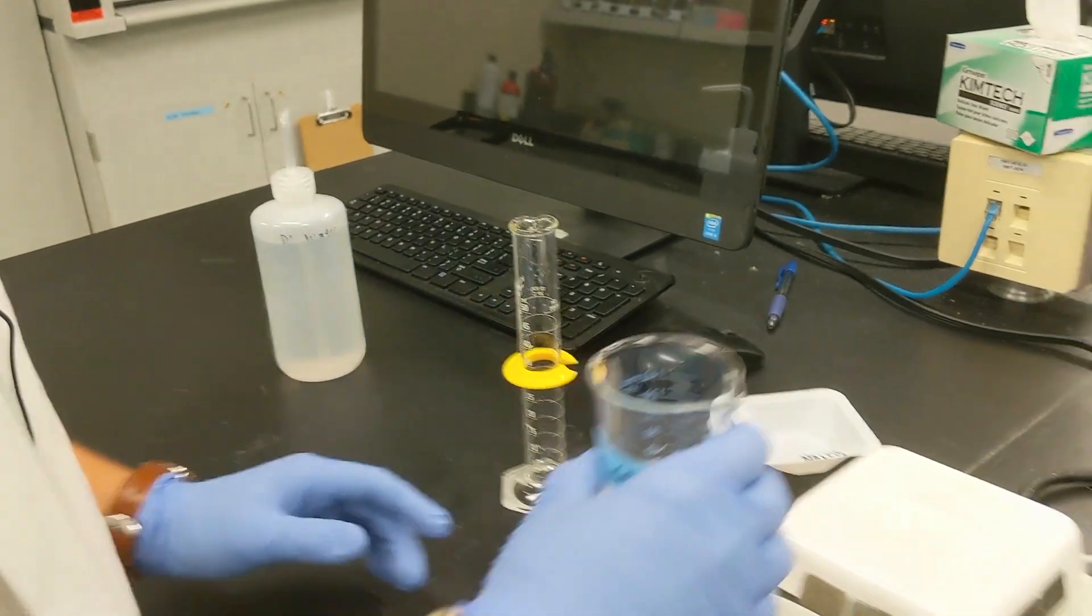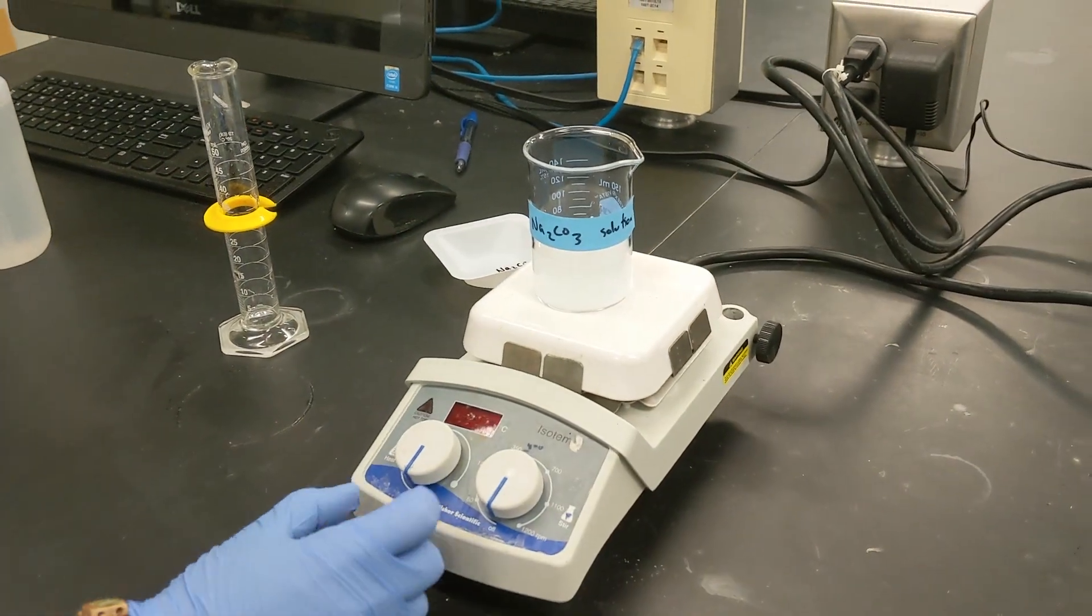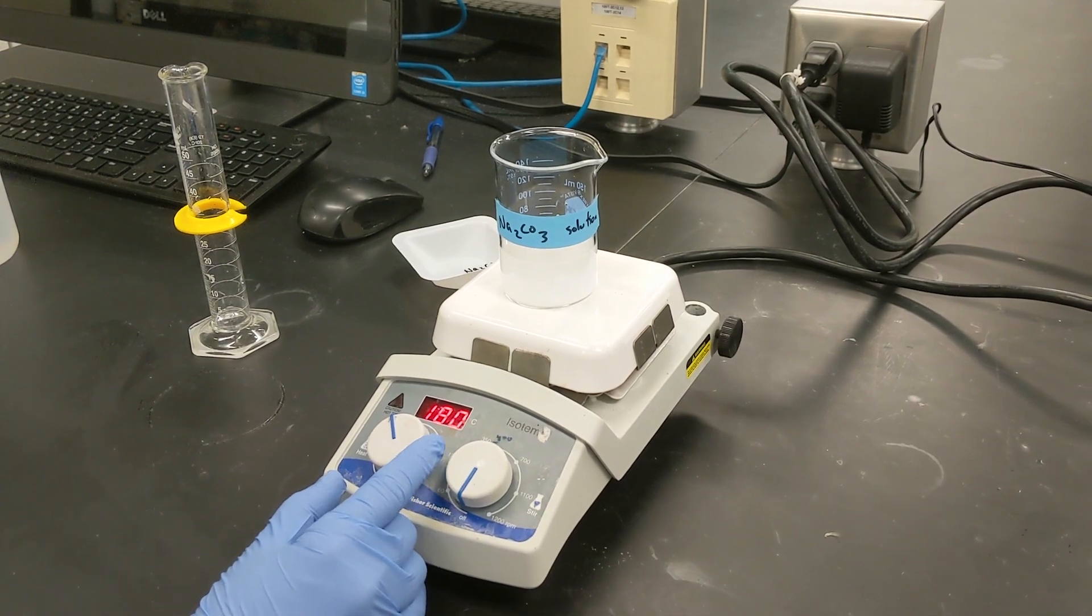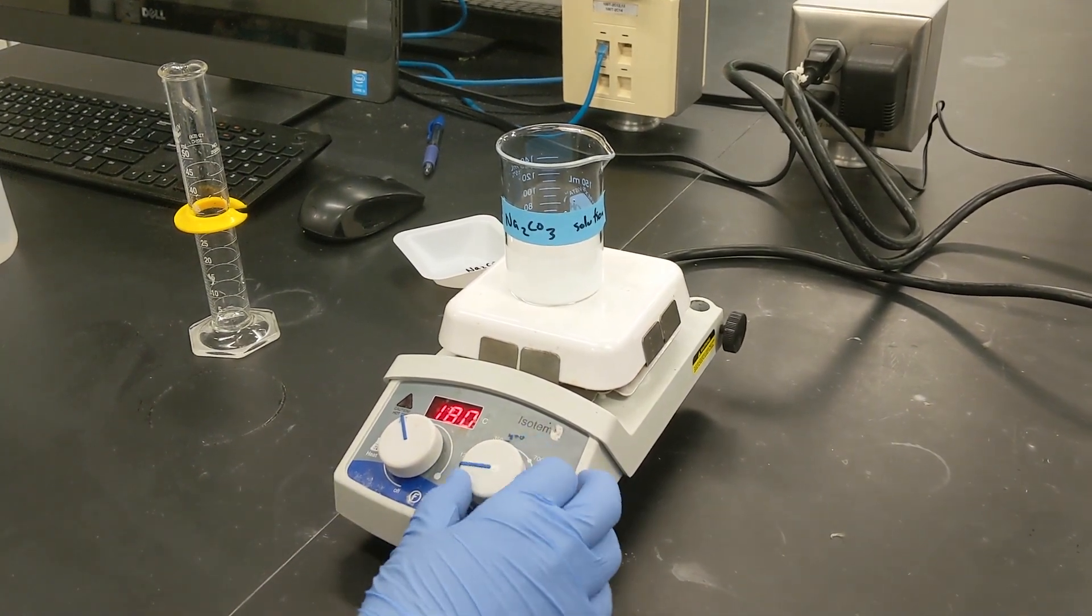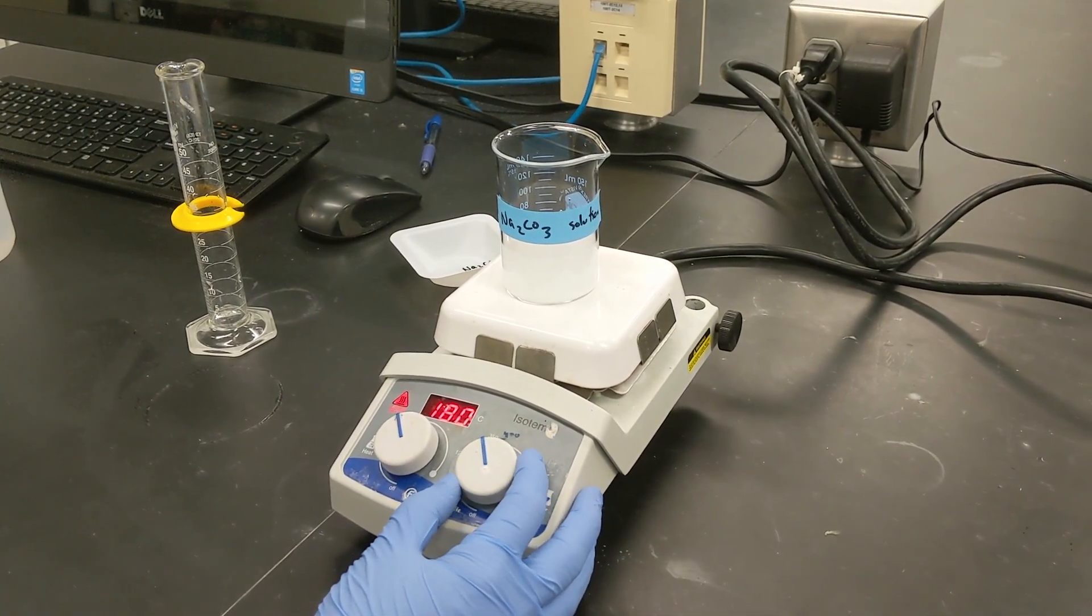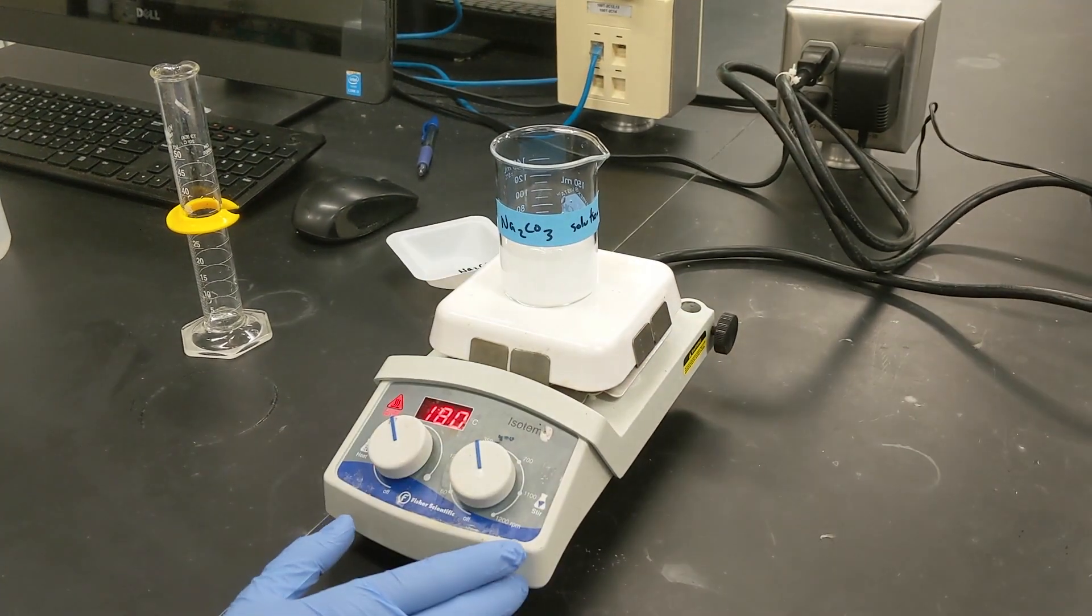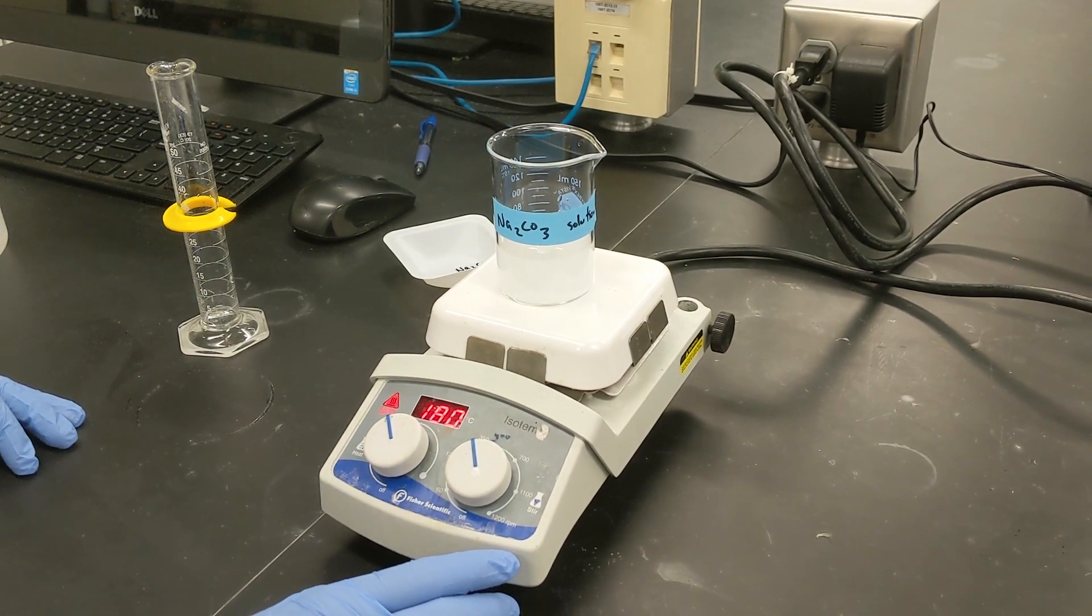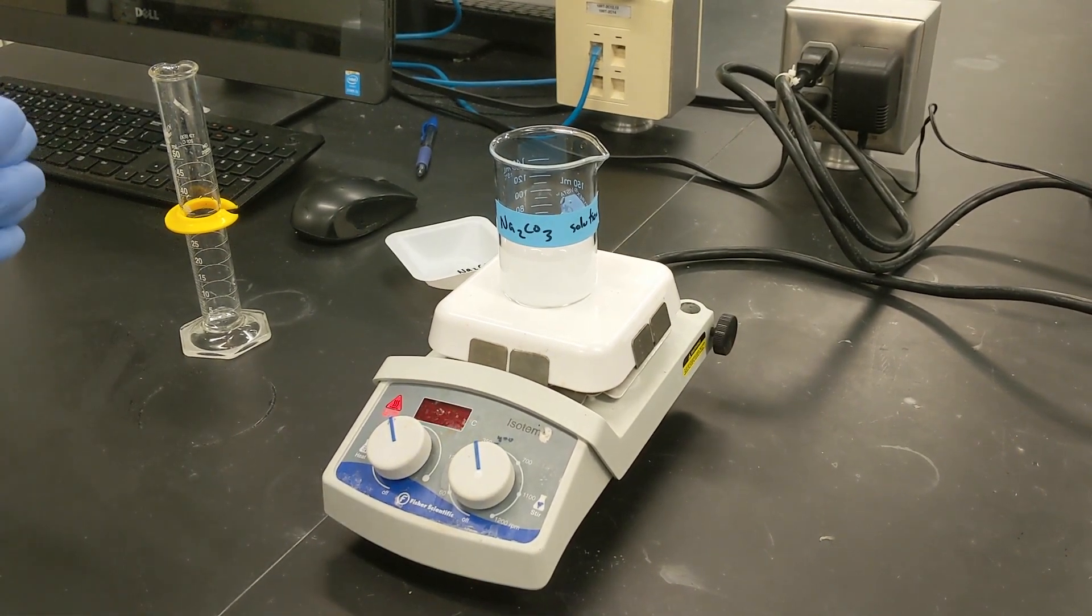There's a stir bar in there and so now what we're going to do is add this to the hot plate. We're going to turn up the heat a little bit, kind of keep it on low heat, and then we're going to turn on the stirring part of this stir plate and get it stirring and we'll wait for it until it is completely in solution.